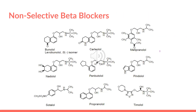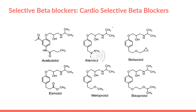For the non-selective beta blockers, we have many: vinolol, carteolol, metipranolol, nadolol, penbutolol, pindolol, sotalol, propranolol, and timolol. We also have many selective beta blockers, which are cardioselective. Cardioselective means that they are only selective on the beta-1 receptors. They are acebutolol, atenolol, betaxolol, esmolol, metoprolol, and bisoprolol.